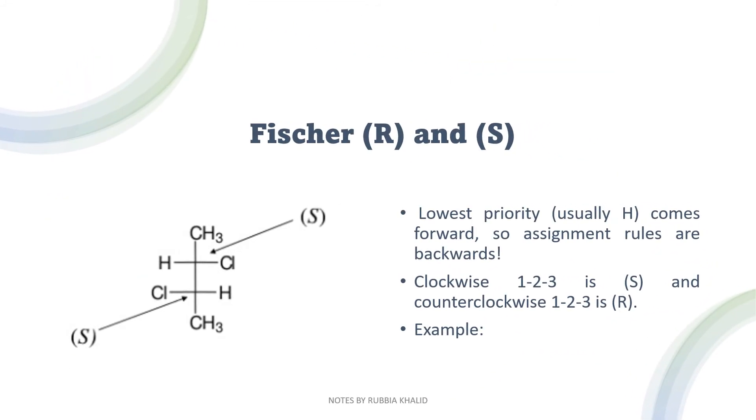Next, Fischer R and S. Lowest priority, usually H, comes as assignment rules are backwards. H comes forward, so assignment rules are backwards. Clockwise is 1, 2, 3, which is S rotation nomenclature, and counterclockwise is 1, 2, 3, R nomenclature. This is a diagram of clockwise rotation.